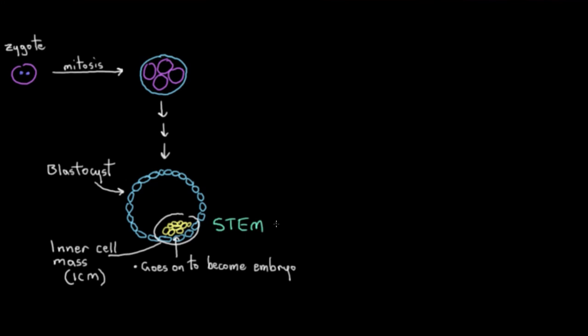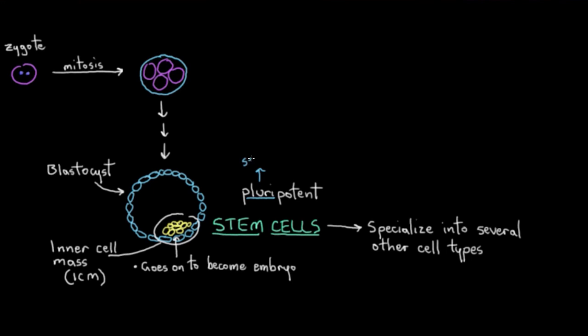So these are called stem cells. And what they can do as stem cells is they can specialize into several other cell types. So we actually call them pluripotent stem cells. Pluri meaning several and potent referring to these stem cells ability to actually do this differentiation.